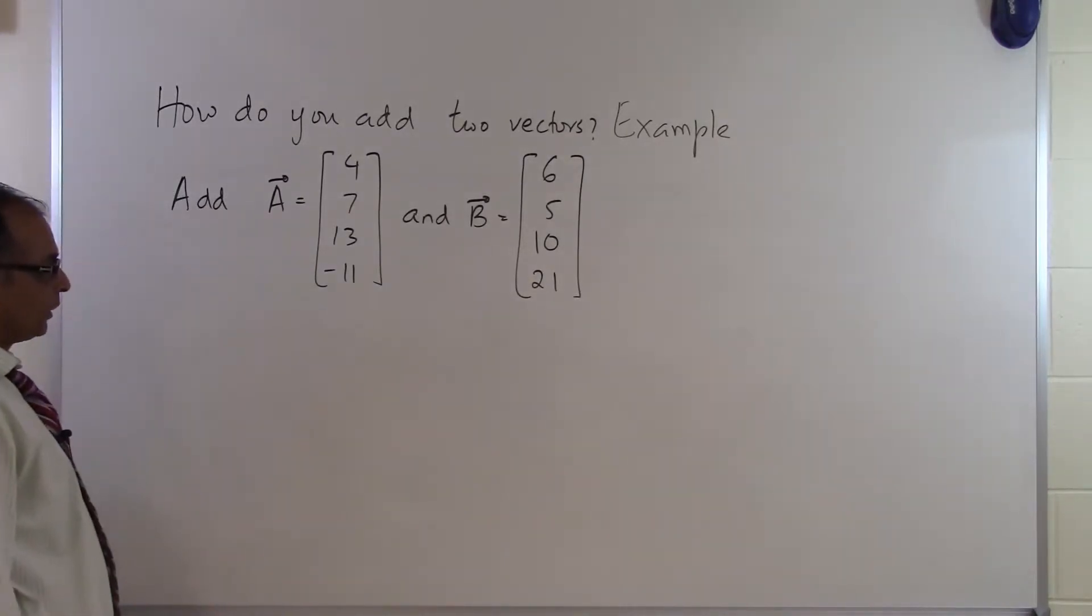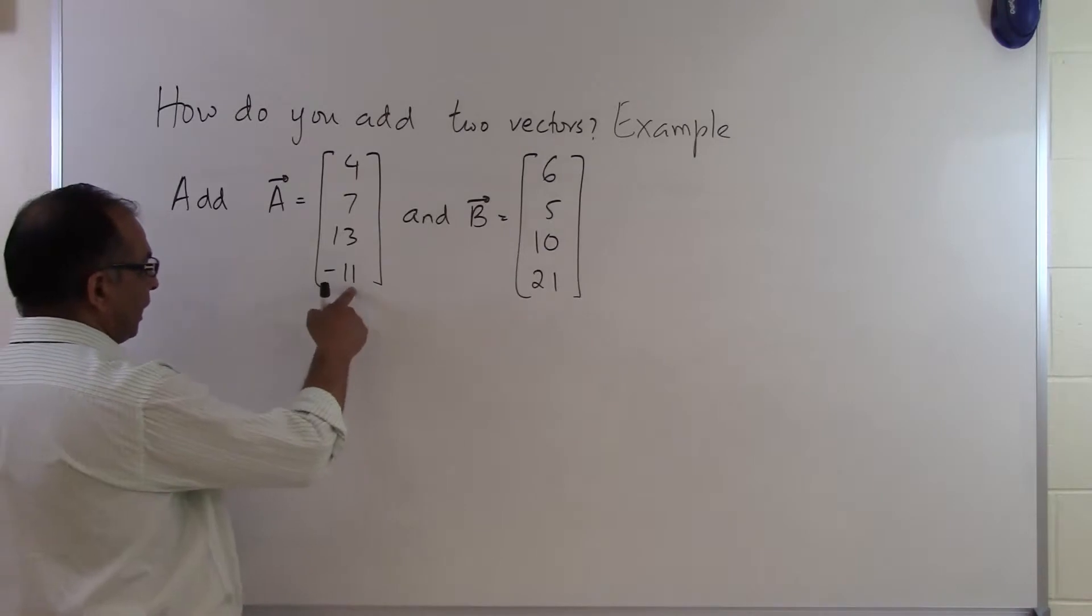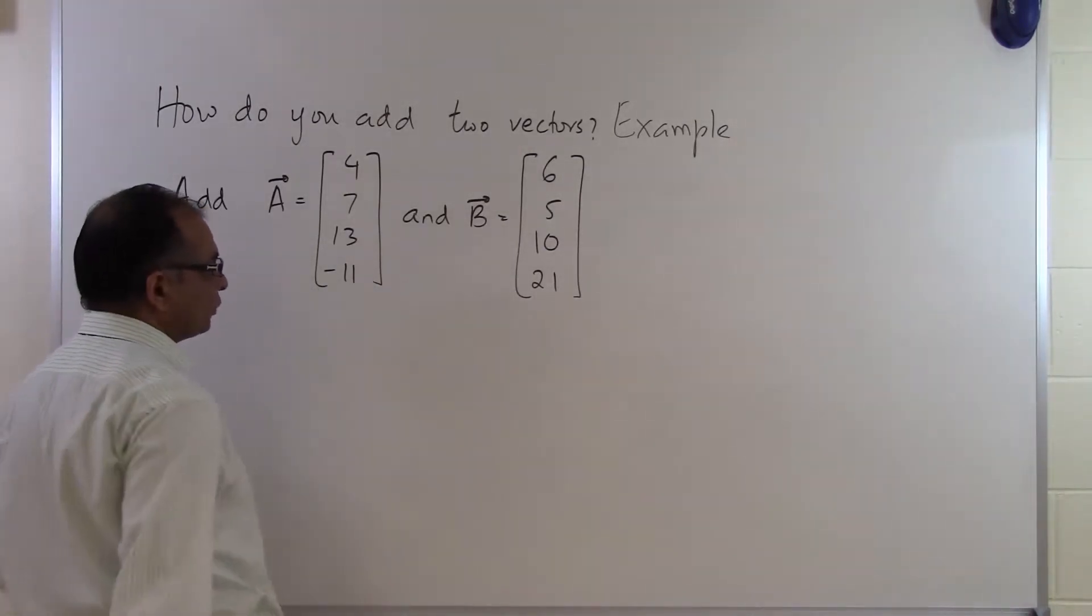So they're simply asking you to add two vectors. The first thing you have to understand is that the number of components in A has to be the same as the number of components in B.